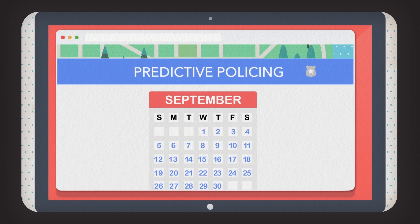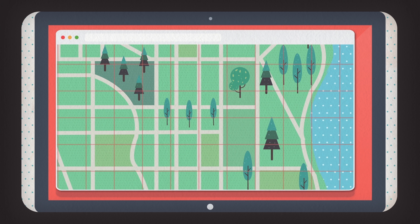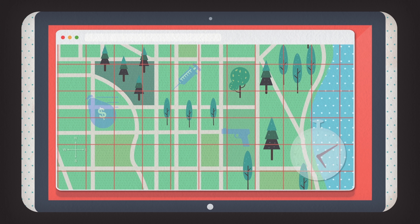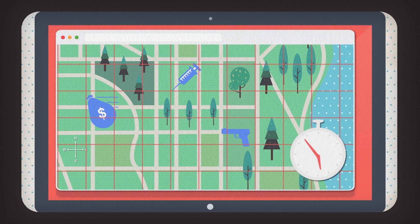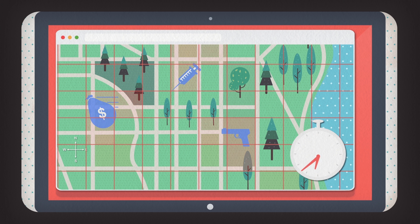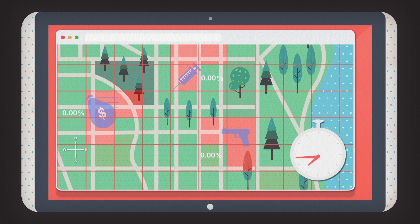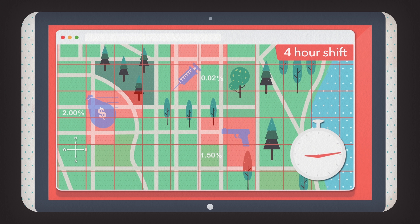Most predictive policing begins with a grid, dividing a city into squares that can be as small as half a block. Beginning with data of previous crimes, computer programs create a forecast for each square, estimating the risk of a crime occurring there during a precinct's next four-hour shift.